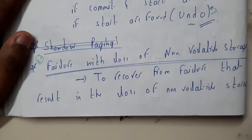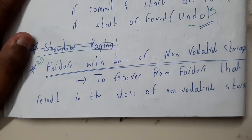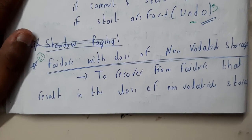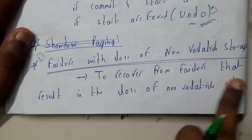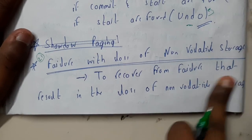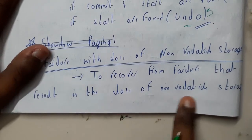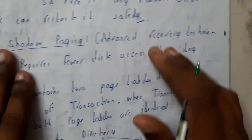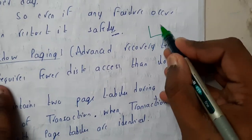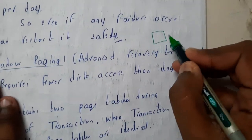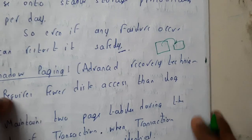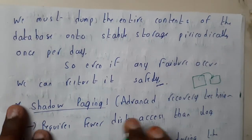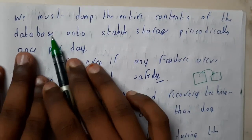The best example for anything will be natural calamities — nothing can withstand natural calamities. So to recover from failure that results in loss of non-volatile storage, the best method is to store your non-volatile data onto one more device, so that whenever there is any issue we can recover them.